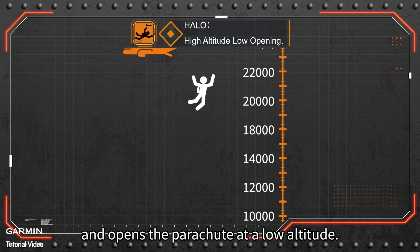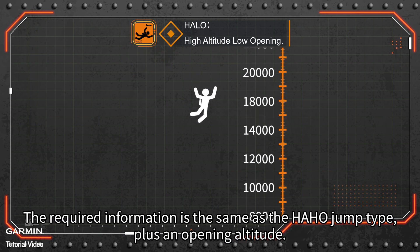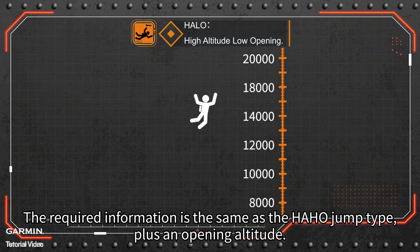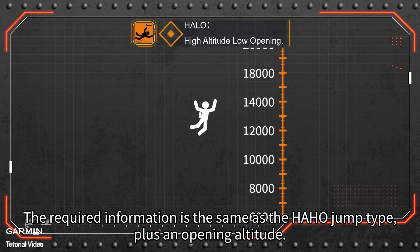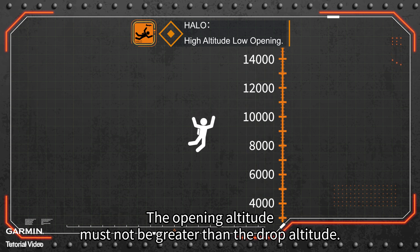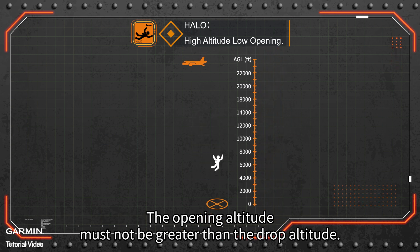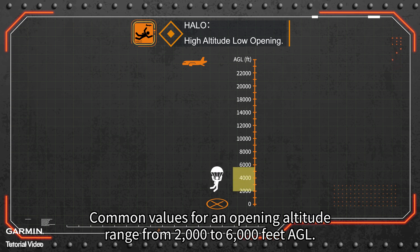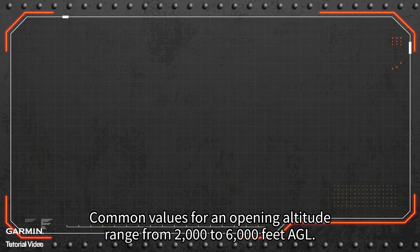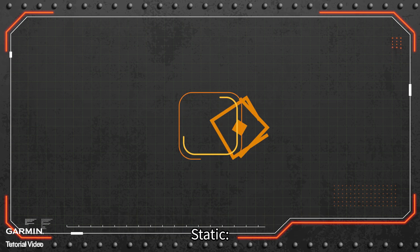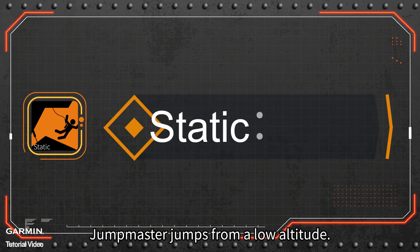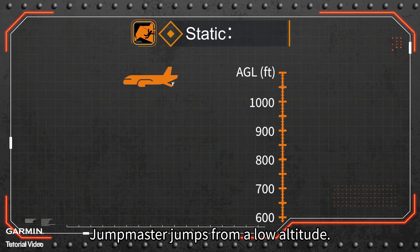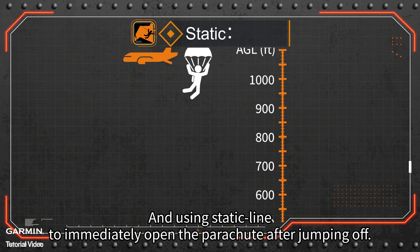HALO — High Altitude Low Opening: the jump master jumps from a very high altitude and opens the parachute at a low altitude. The required information is the same as the HAHO jump type, plus an opening altitude. The opening altitude must not be greater than the drop altitude. Common values for an opening altitude range from 2,000 to 6,000 feet AGL.